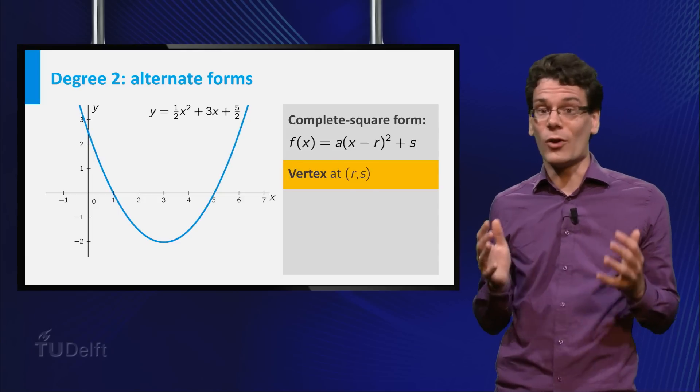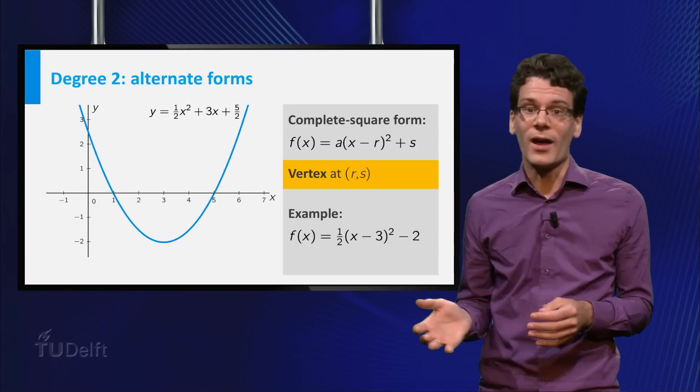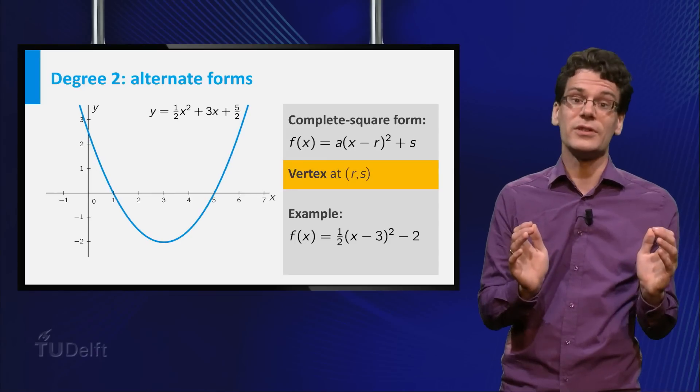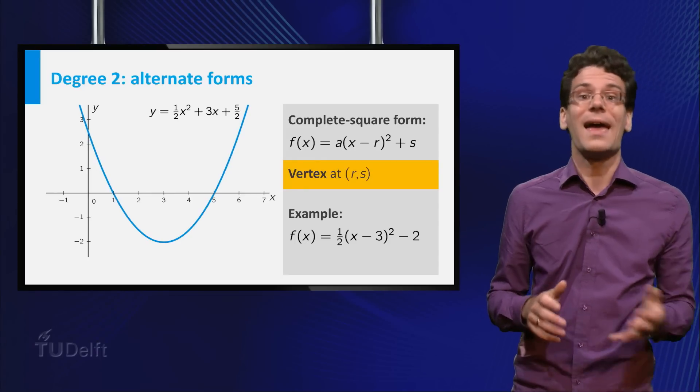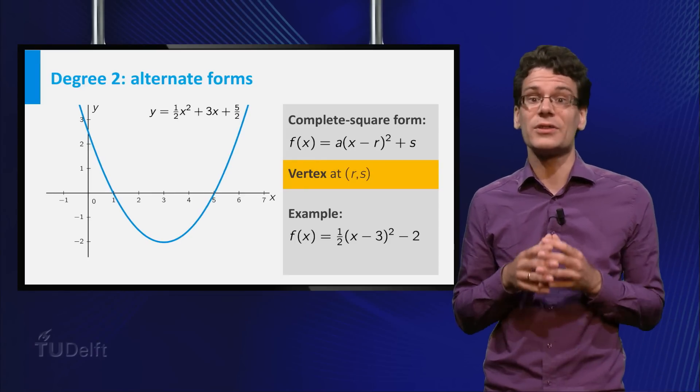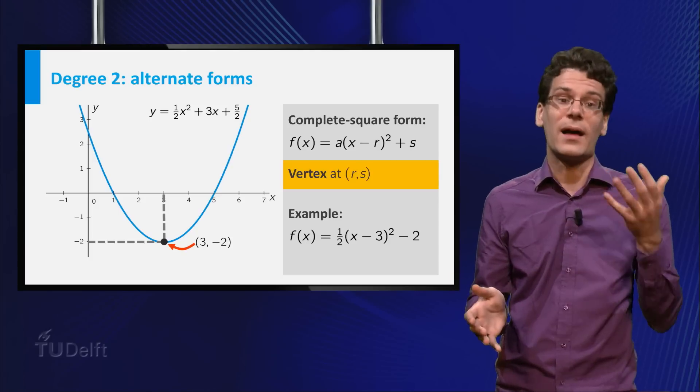Our example polynomial can also be written in this form, 1/2 times (x minus 3) squared minus 2, and indeed you see that the vertex is located at 3 comma minus 2.